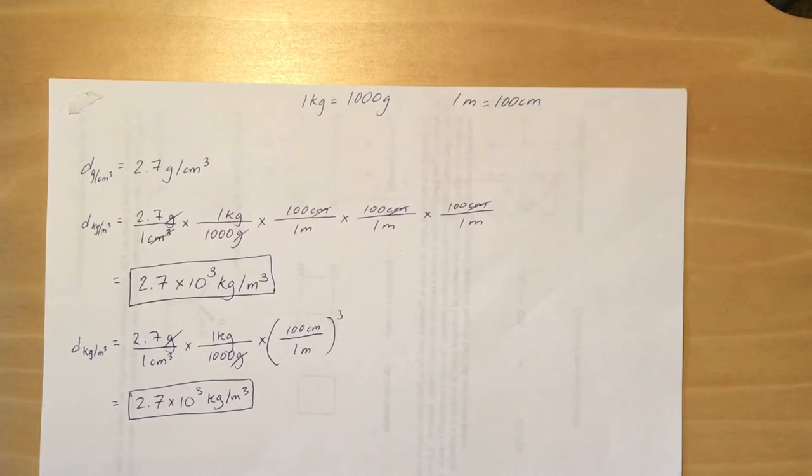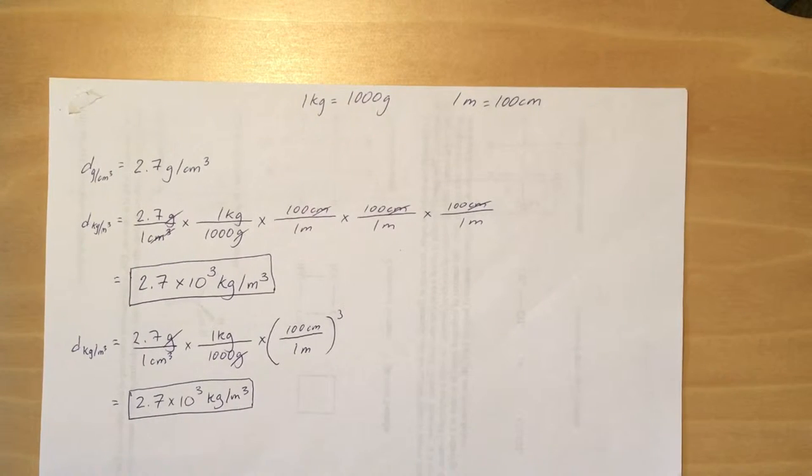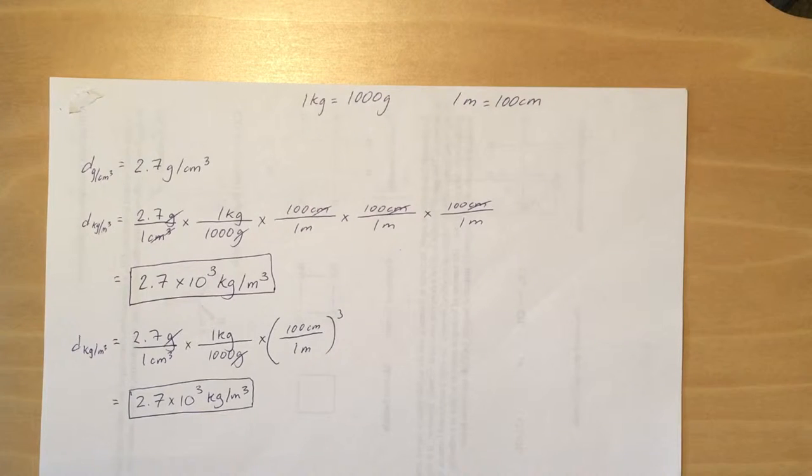The two conversion factors you need are at the top of the page: one kilogram equals a thousand grams and one meter equals 100 centimeters. Both of them you should know by now, you should know your metric to metric conversions.